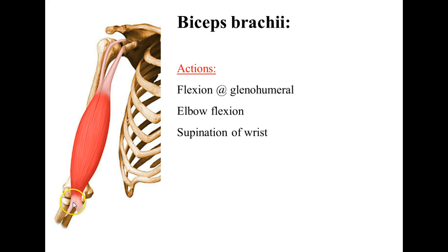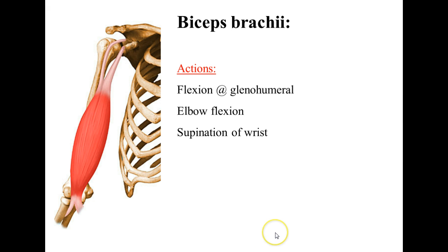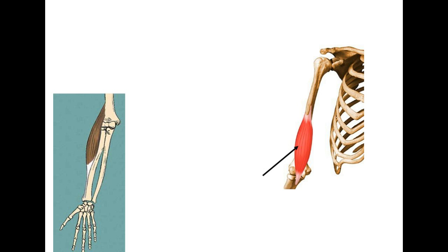The biceps brachii also performs supination at the proximal radioulnar joint. The radial tuberosity is normally positioned more medially, and when you supinate the wrist, the biceps brachii helps pull the radial tuberosity. If you place your hand on your biceps brachii with a bent elbow and perform supination, you can feel that action in the muscle.